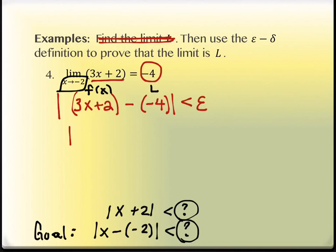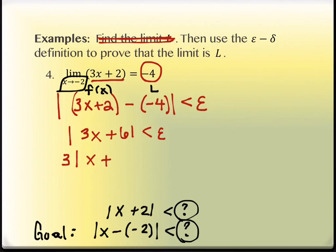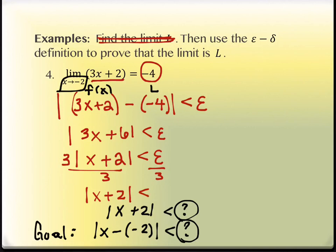First step: combine inside the absolute value to get absolute value of 3x + 6. Then factor out 3 to get 3 times absolute value of x + 2 less than epsilon. Last step: divide by 3 to get absolute value of x minus (negative 2), or x + 2, less than epsilon over 3. That's the delta value we were looking for.